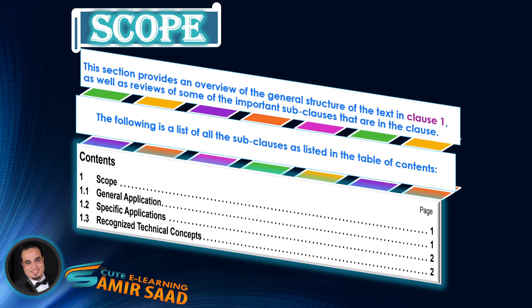This section provides an overview of the general structure of the text in Clause 1, as well as reviews of some of the important sub-clauses. The following is a list of all the sub-clauses as listed in the Table of Contents. In the following slides, we highlight important information contained in Clause 1 accompanied by the sub-clauses.